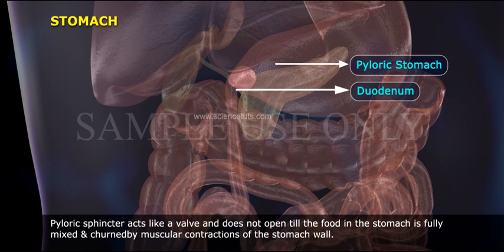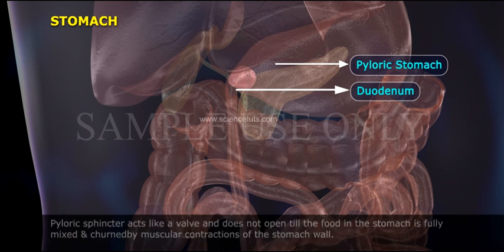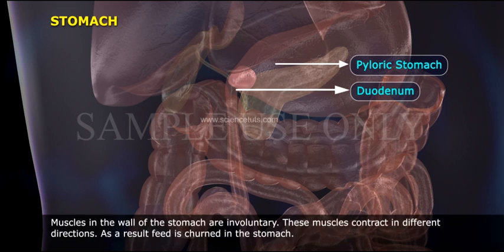The opening of the pyloric stomach into the duodenum is protected by the pyloric sphincter. The pyloric sphincter acts like a valve and does not open until the food in the stomach is fully mixed and churned by muscular contractions of the stomach wall. The muscles in the wall of the stomach are involuntary and contract in different directions, as a result food is churned in the stomach.